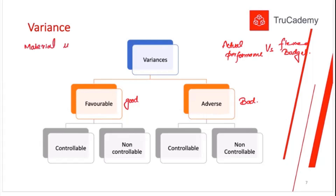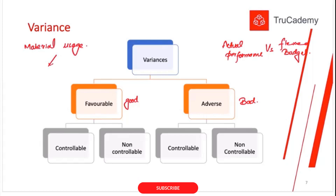For example, if you are calculating the variances for material usage — if a variance is arising due to some internal factor like labor being careless or machinery not working properly, causing wastage and extra material use, giving an adverse variance in material usage, then yes, it's possible to control it. You can provide better training to employees, have more supervision, or improve the machinery technology.